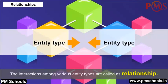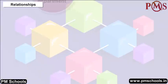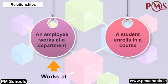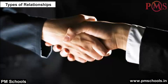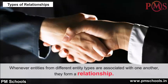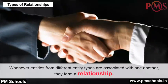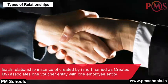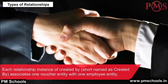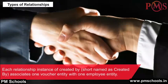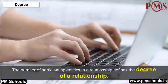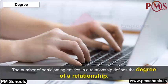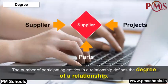Relationships: The interactions among various entity types are called relationships. For example, an employee works at a department; a student enrolls in a course — here 'works at' and 'enrolls' are called relationships. Types of Relationships: When entities from different entity types are associated, they form a relationship. Each relationship instance associates one voucher entity with one employee entity. The degree of a relationship is the number of participating entities — a relationship between two entities is binary, and between three is ternary.